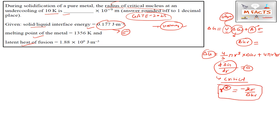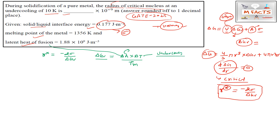So r* = -2σ / ΔGv is our main formula for this question. ΔGv is the Gibbs free energy change per unit volume, and it may also be defined as: ΔGv = ΔH·ΔT / Tm. Here ΔH is the latent heat of fusion, ΔT is the undercooling (or degree of supercooling), and Tm is the melting temperature. The solid-liquid interface energy σ is given, so we can find ΔGv by putting in ΔH, ΔT, and Tm from the given data.